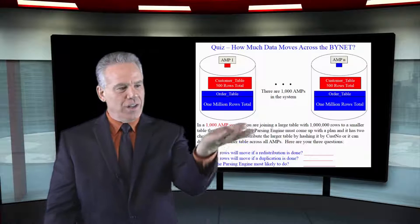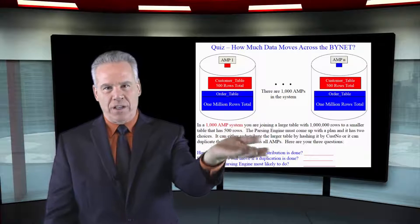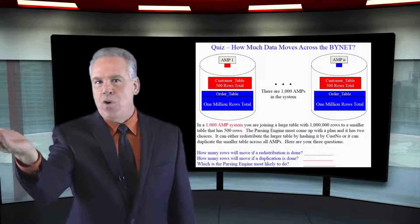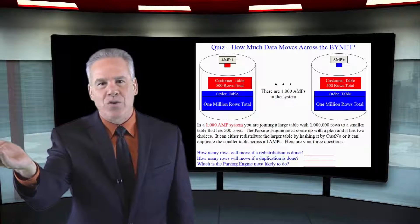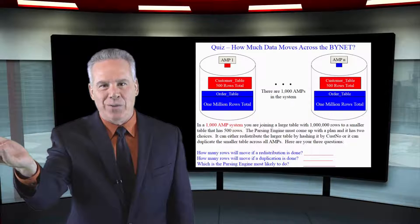Of course, customer table's got a primary index of customer number. Order table's got a primary index of order number. And they're joining on customer number equals customer number.